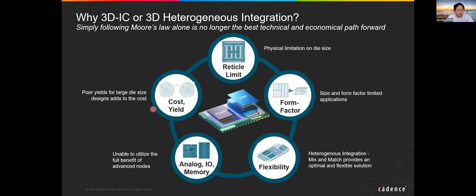Gordon Moore's original 1965 paper considered a combination of cost, yield, productivity, manufacturability, and the number of components on a single wafer — that's where the prediction curve came from. In order to create a smaller form factor, to have our cell phone in our hand, we definitely need thinner and smaller devices, and that consideration also drives 3D IC development.